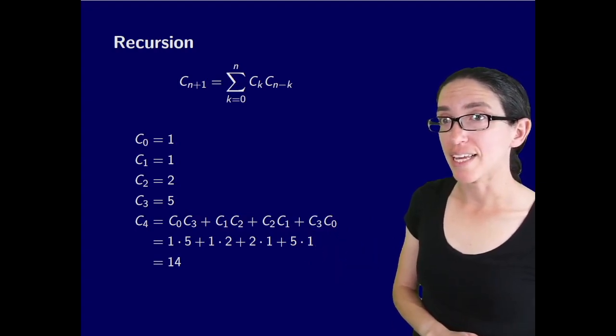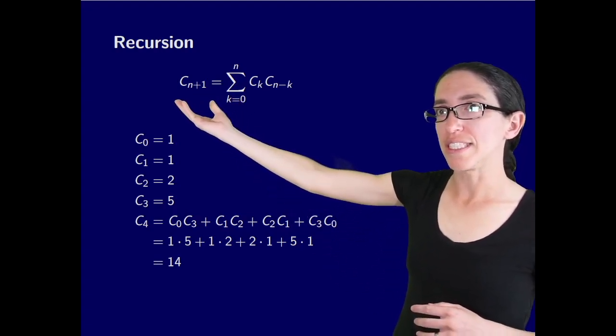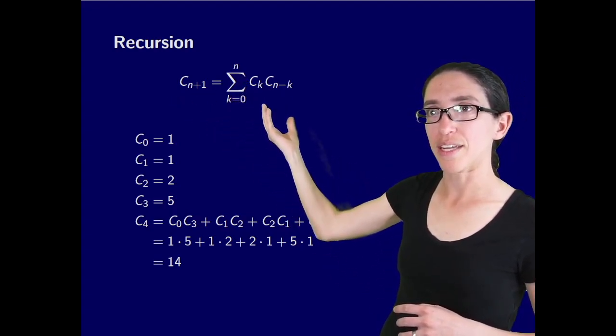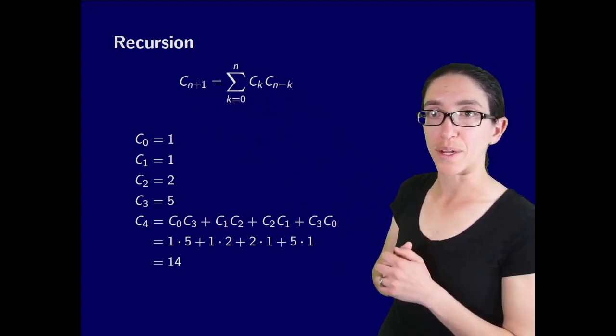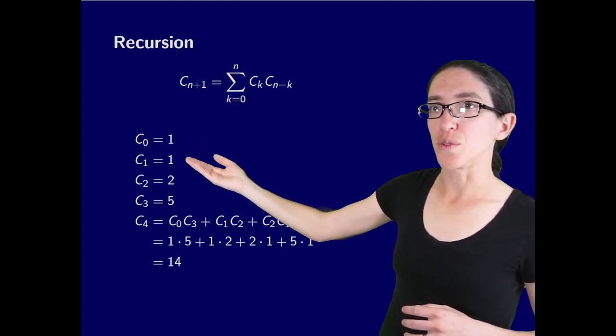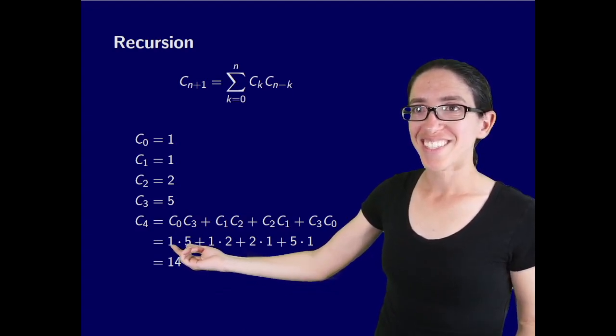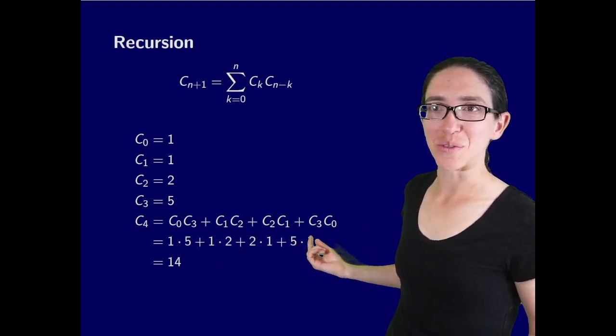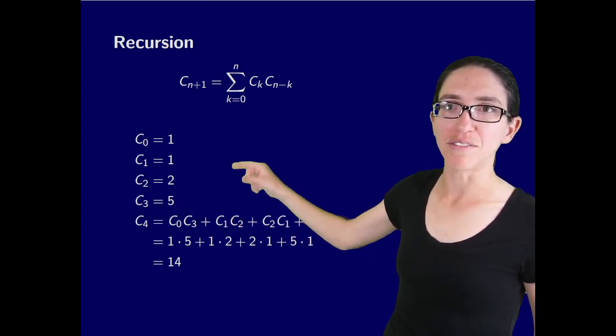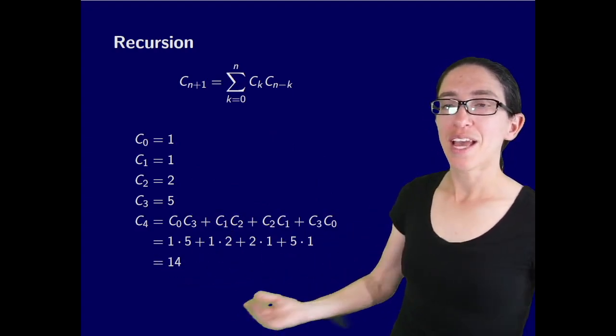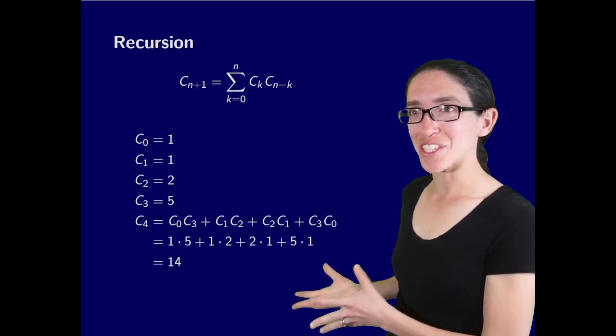Let's look at this recursion in practice to get the next Catalan number. Another way of writing the recursion is C sub n plus 1 is the sum as k goes from 0 to n of Ck times Cn minus k. So if C0 is 1 and C1 is 1 and C2 is 2 and C3 is 5, what's C4? Well we can use the recursion. C0 C3 plus C1 C2 plus C2 C1 plus C3 C0, that's 1 times 5 plus 1 times 2 plus 2 times 1 plus 5 times 1. You add them up and you get 14. That is much easier than writing out 14 Dyck paths.